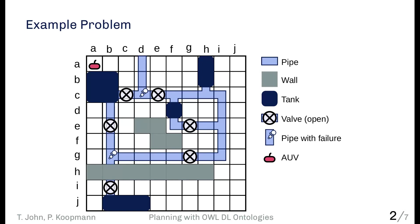Some of the pipes have leakages — failures visible as little bubbles. The last things you can see are walls or other underwater obstacles where the robot cannot pass through. The mission is that the robot should close all the valves such that none of the tanks is connected to a pipe segment with a failure, in order to stop the leakage of whatever is contained in those tanks.